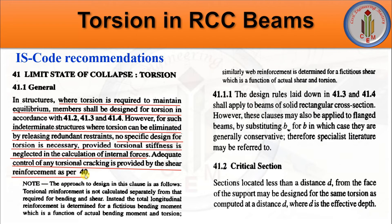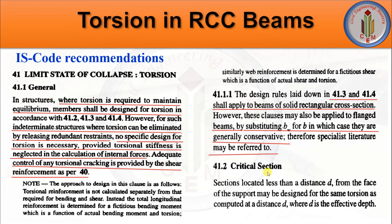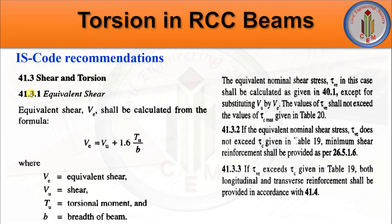Adequate control of any torsional cracking is provided by the shear reinforcement as per Clause 40. If shear reinforcement is provided as per Clause 40, we can neglect the torsional stiffness. Design rules in clauses 41.3 and 41.4 apply to beams of solid rectangular section; they may also be applied to flanged beams by substituting bw for b, in which case they are generally conservative. For the critical section, sections located less than distance d from the face of the support may be designed for the same torsion computed at distance d, where d is the effective depth.